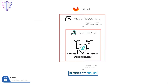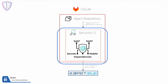Let's start with the scanning process. You need to add our security stage to the required application repository pipeline, which sends the repository's contents to our security CI, where they are scanned by different classes of scanners: static and dynamic analyzers, secrets detection, vulnerabilities in dependencies, and mobile application analysis. A link to the security CI can be found in the description.